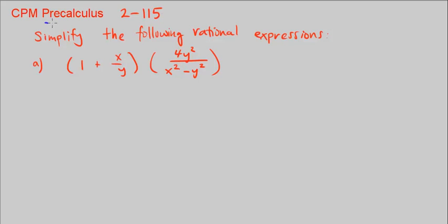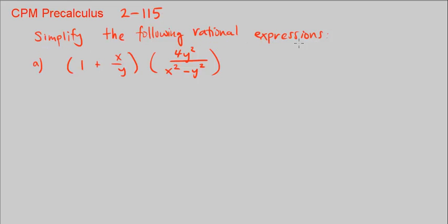This is CPM Pre-Calculus, Chapter 2, Number 115. Here we're asked to simplify these rational expressions. In Part A we're given 1 plus x over y, times 4y squared over x squared minus y squared. The key is to simplify and factor the numerators and denominators first.